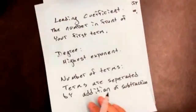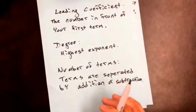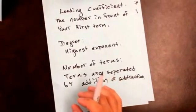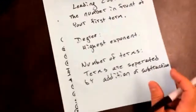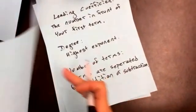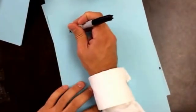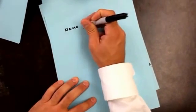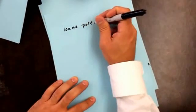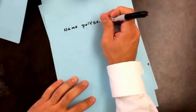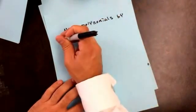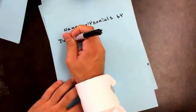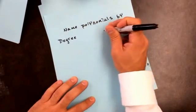The reason we do that is actually because of the names — we're going to want to name the polynomials. There are two different ways that we name them. You name polynomials — you guys learned this in Algebra 1 — by degree and by number of terms.